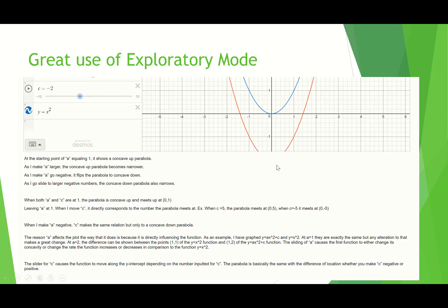So this person actually did a couple really cool things. One thing that she did was actually graphed x squared in blue, and then the red is the ax squared plus c. And what I love here is they really went through an exploratory kind of what-if scenario. When both a and c are 1, the parabola is concave. Leaving a at 1, when I move c it corresponds to the number the parabola meets. For example, c is 5, the parabola meets at 0, 5, negative 5.